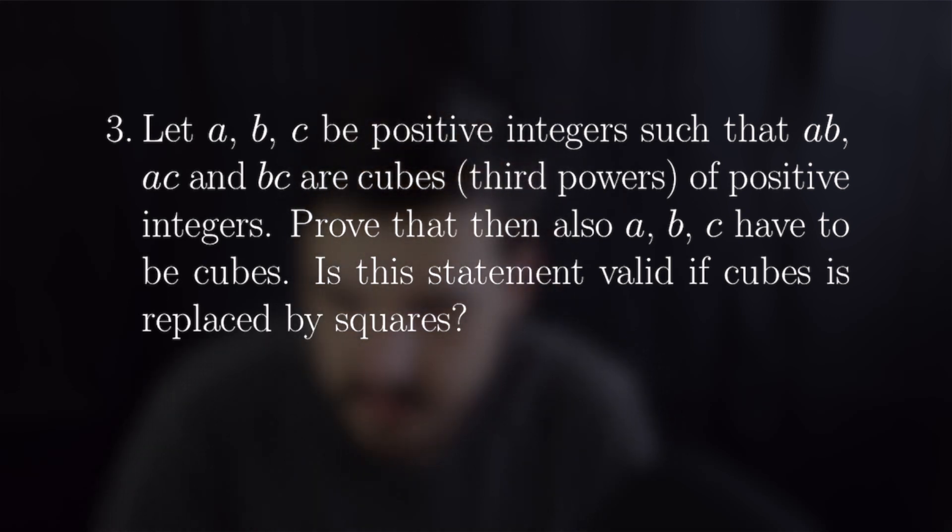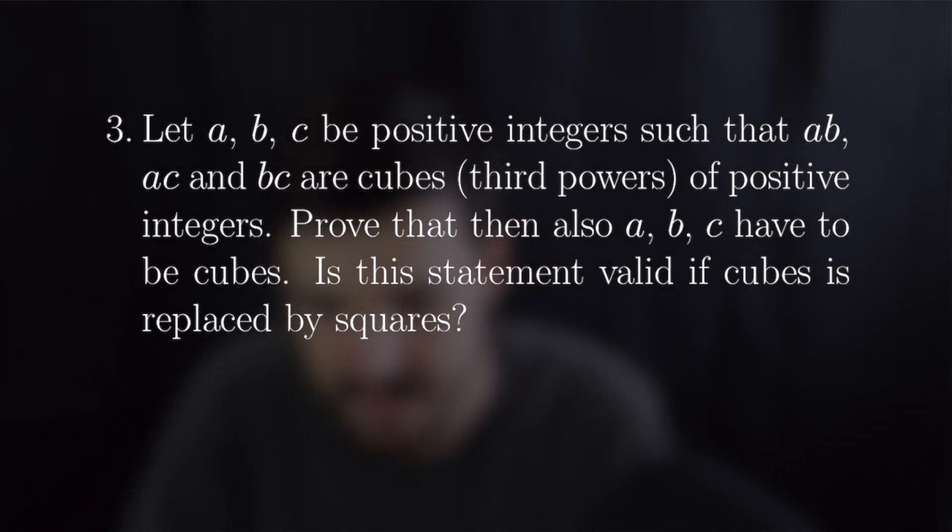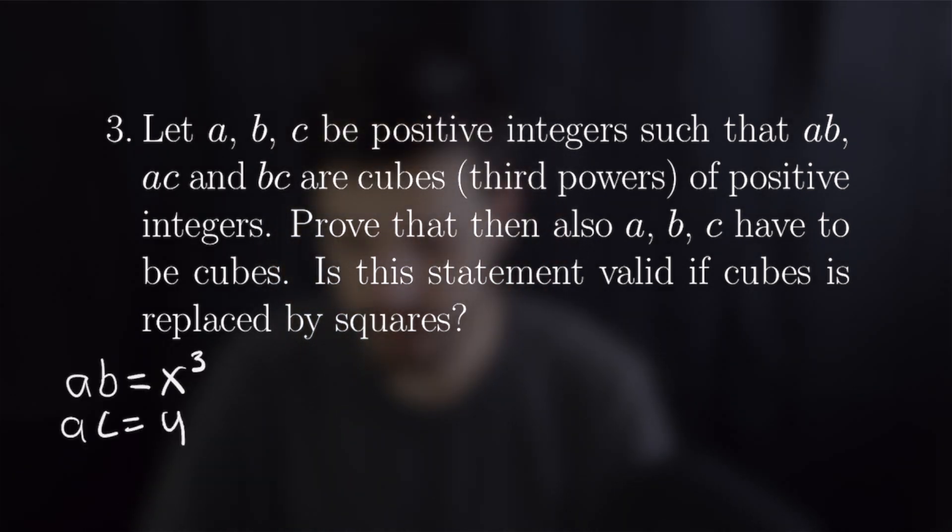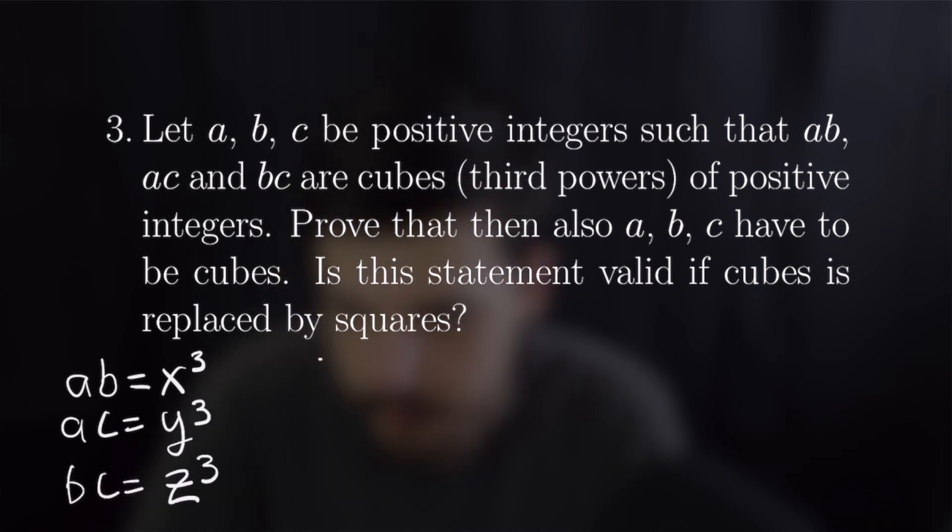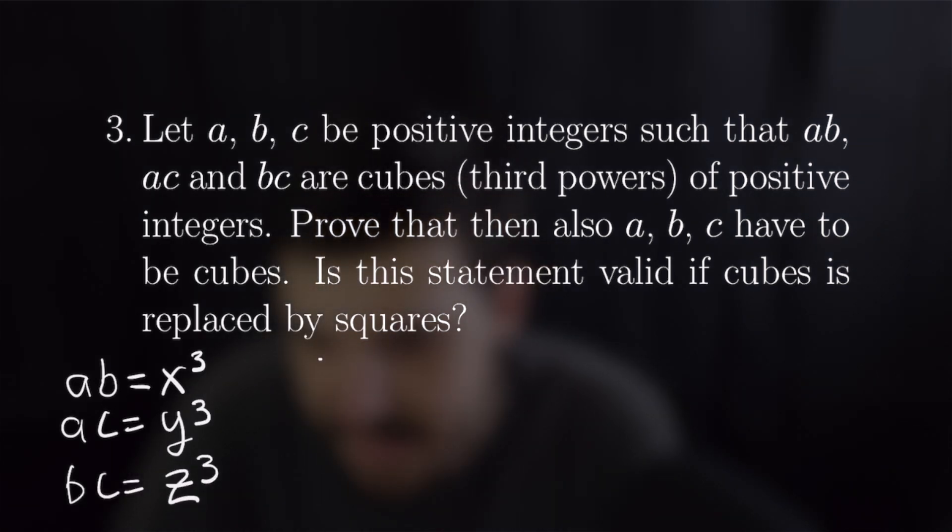So taking our definitions for ab, ac and bc being equal to cubes we will write them out as ab equals x cubed, ac equals y cubed and bc equals z cubed. From here we are going to multiply ab and bc together to get ab squared c is equal to x cubed times z cubed.